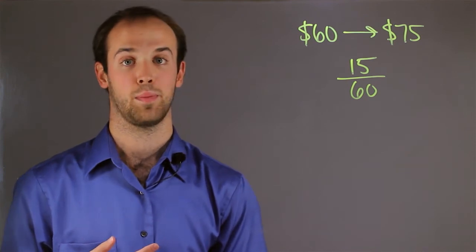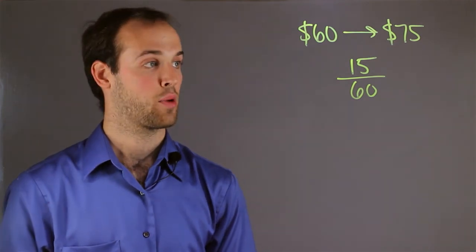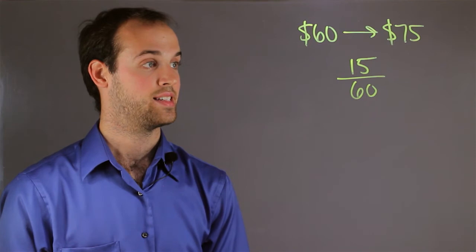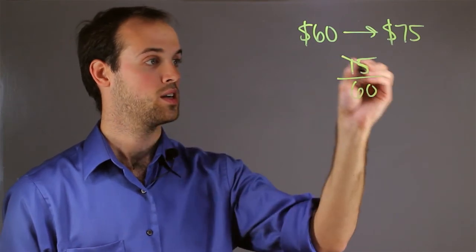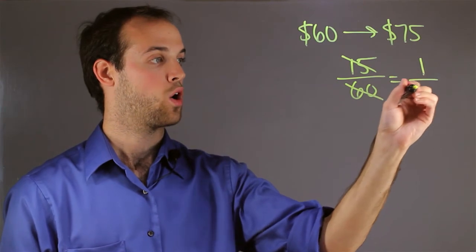The next step would simply be to reduce the fraction to its lowest terms by dividing by the common factor. And the greatest common factor that 15 and 60 have is 15. So I will divide both by 15, and I will get 1 over 4.